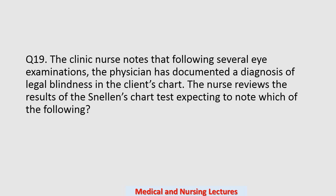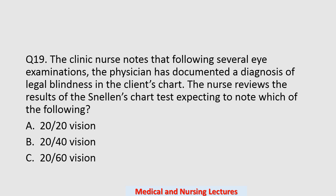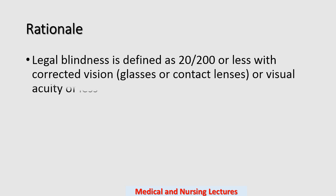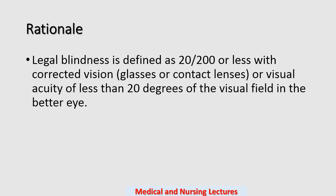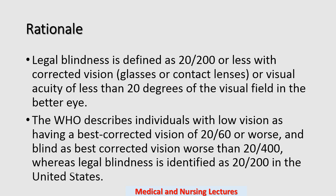Question number nineteen: the clinic nurse notes following several eye examinations that the physician has documented a diagnosis of legal blindness. The nurse reviews the Snellen chart results expecting to note — options are 20/20, 20/40, 20/60, or 20/200 vision. The correct option is 20/200. Legal blindness is defined as 20/200 or less with corrected vision (glasses or contact lenses) or visual acuity of less than 20 degrees of the visual field in the better eye.